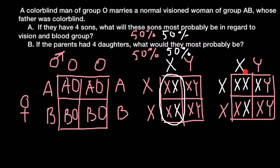This blood type distribution is true for both females and males. Only two blood groups are possible in the progeny of these two parents. To be more specific: 25% of total male progeny would be normal vision and blood group A, 25% normal vision and blood group B, 25% colorblind and blood group A, and 25% colorblind and blood group B. The same rule applies for the female progeny.